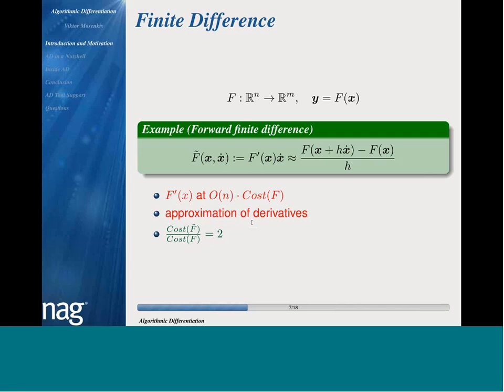Another problem is that to compute all entries of the Jacobian, you need to approximate N directional derivatives using finite difference. The computational cost of computing the Jacobian by forward finite difference is linear in the number of inputs. The good thing is that the cost of evaluating one directional derivative using forward finite difference is roughly two, because you only need to compute the original function value and the bumped function value.